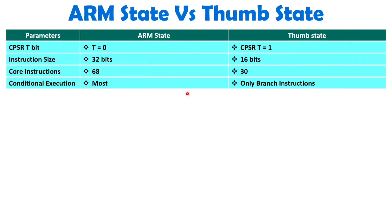In ARM state, almost all instructions — other than 5 — support conditional execution. Separate videos will cover all ARM state instructions in detail. In Thumb state, we have only 30 instructions, and out of those 30, only branch instructions support conditional execution.